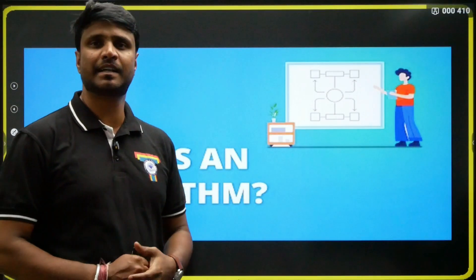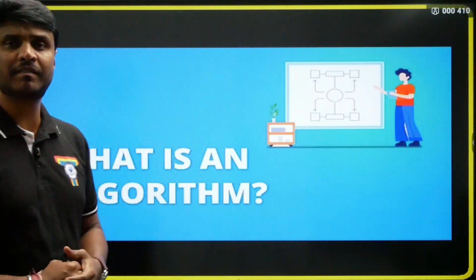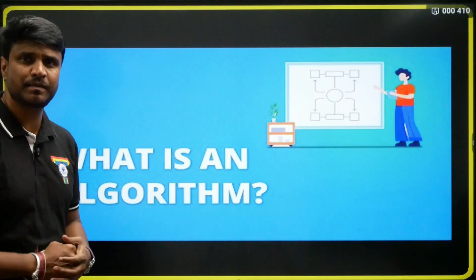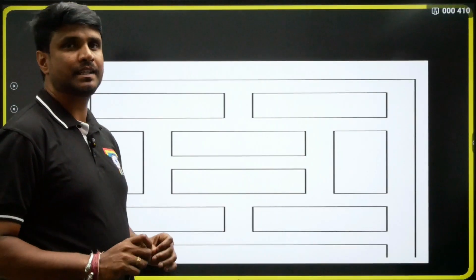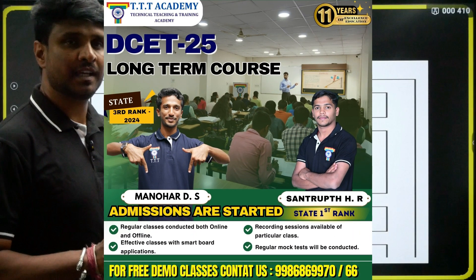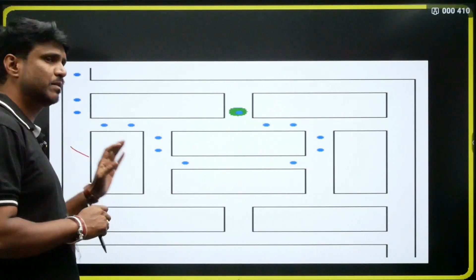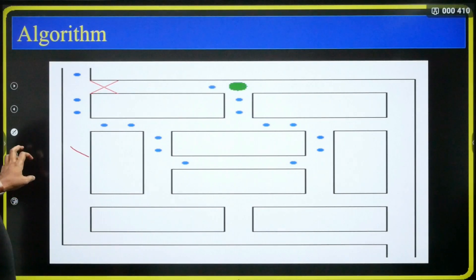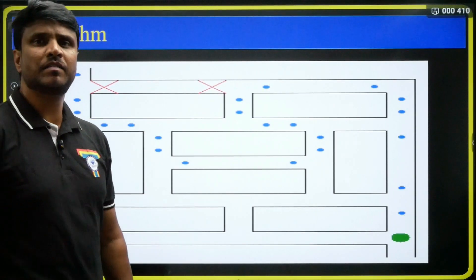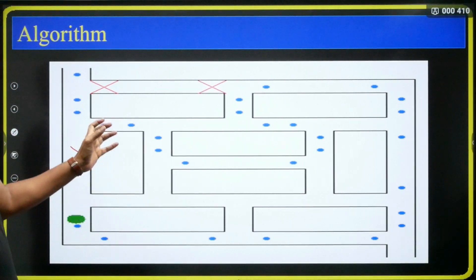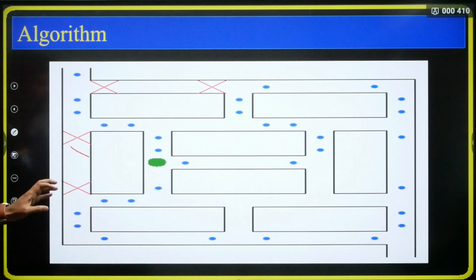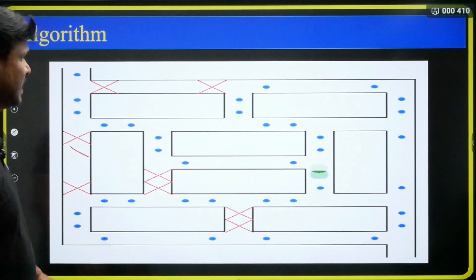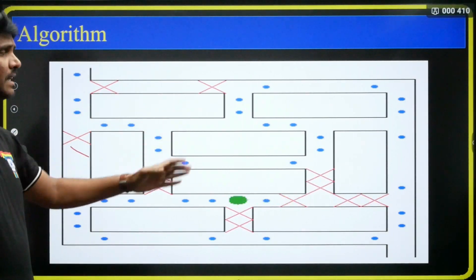First we have a concept called: what is an algorithm? This is a simple example for algorithm. I have designed a game, and there is a different path to reach the destination.